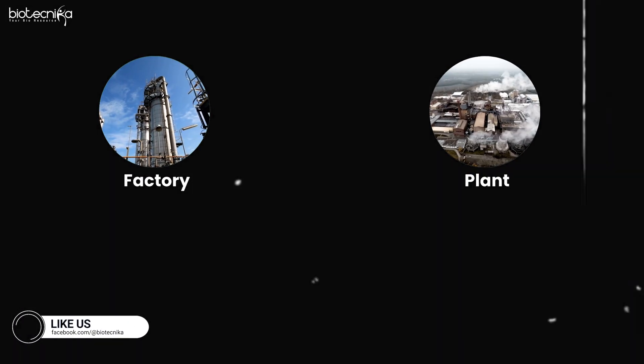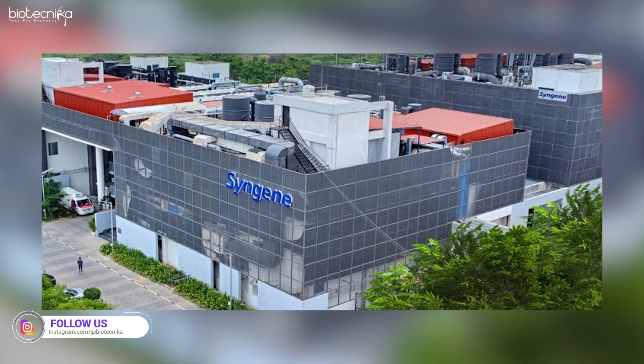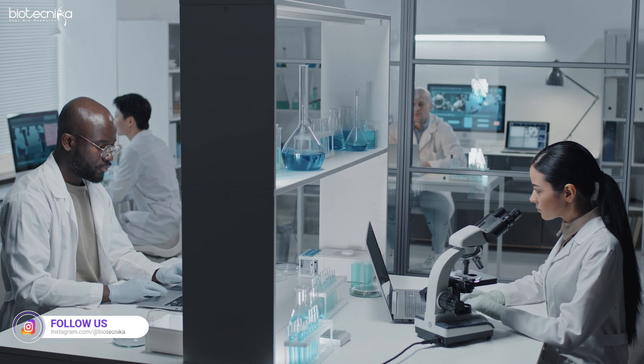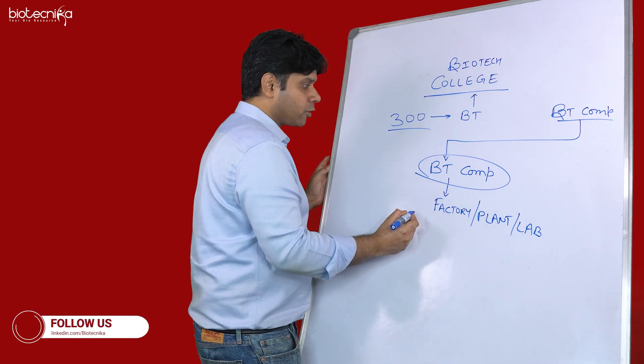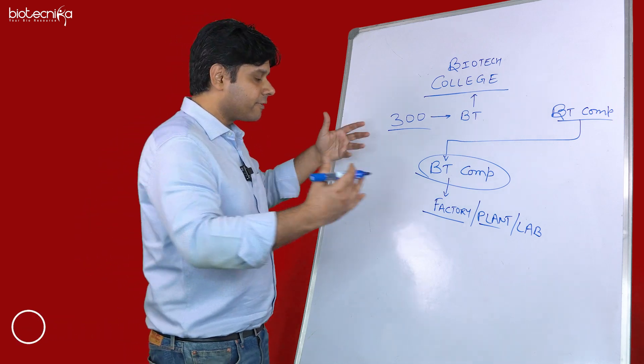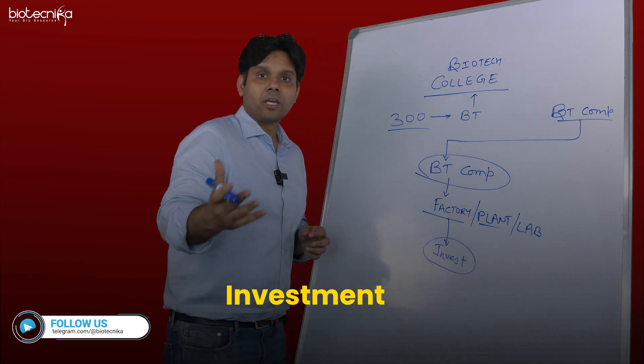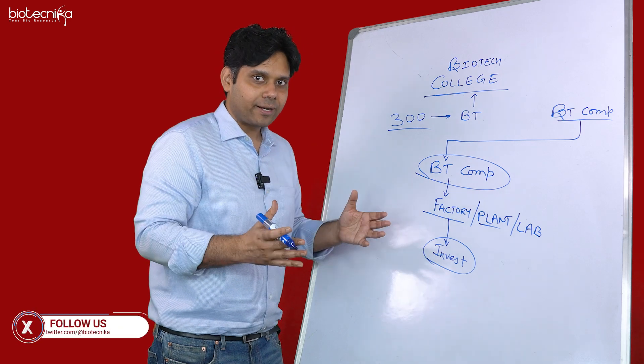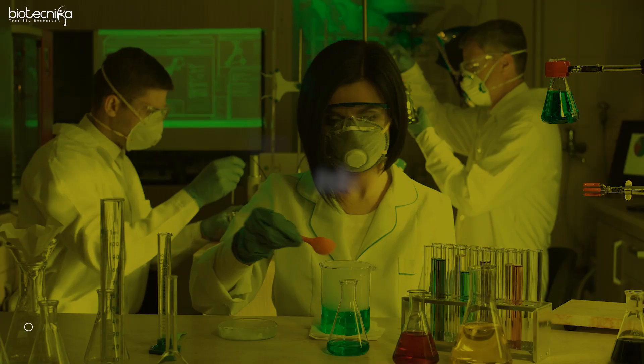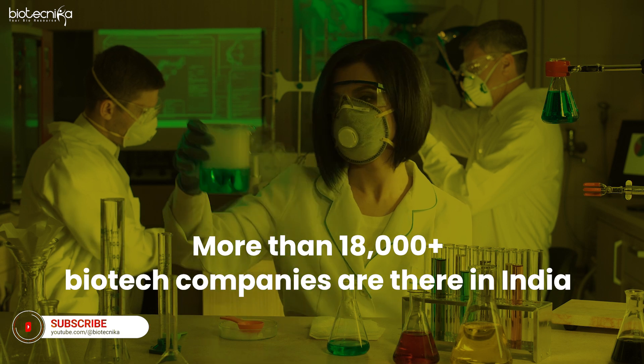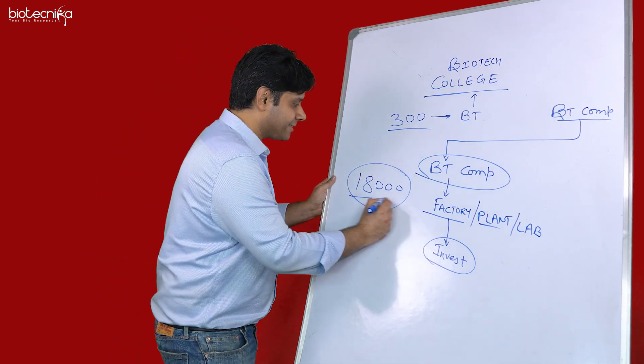Most biotech companies are a factory or a plant or a lab. For example, Biocon or Syngene have factories and plants, while smaller startups have labs. If you want to build a factory or a plant, you need big land and a lot of investment - hundreds of crores. That is why there are not so many biotech companies. But if I calculate biotech companies plus startups plus pharma companies, more than 18,000 biotech companies are there in India.